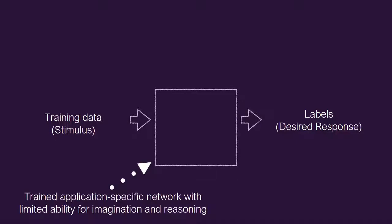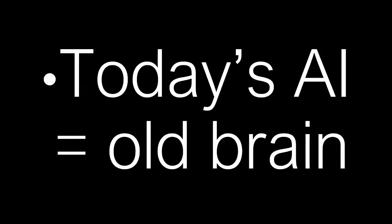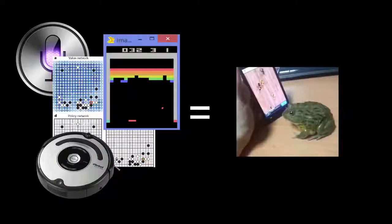And that box is, one, inscrutable. And it also doesn't have much ability for thinking, imagination, etc. All those characteristics that we associate with intelligence. So how do you go from today's AI, which is old brain, to the new brain? So all this stuff is old brain. How do we go from there to new brain?